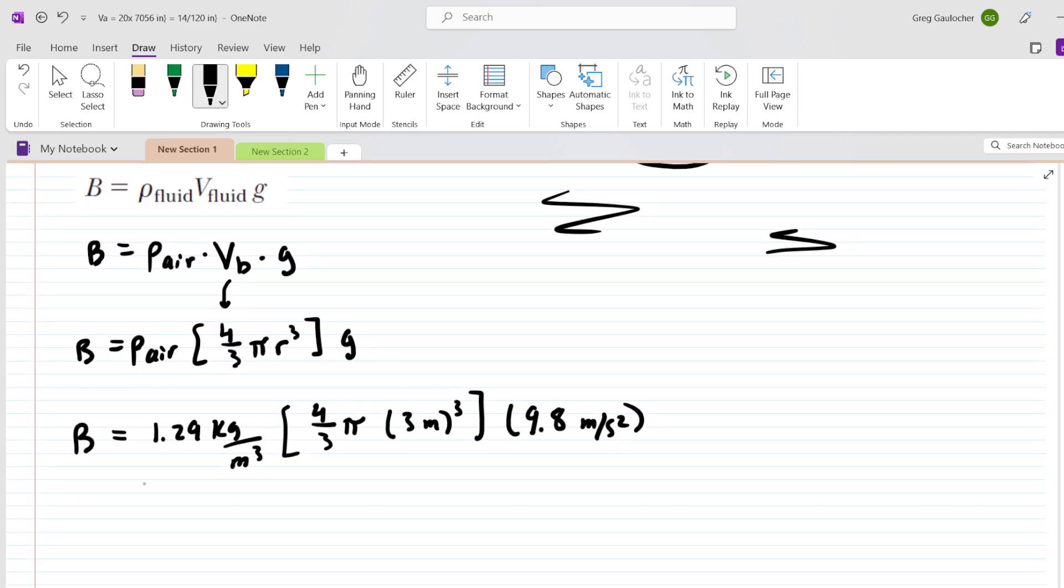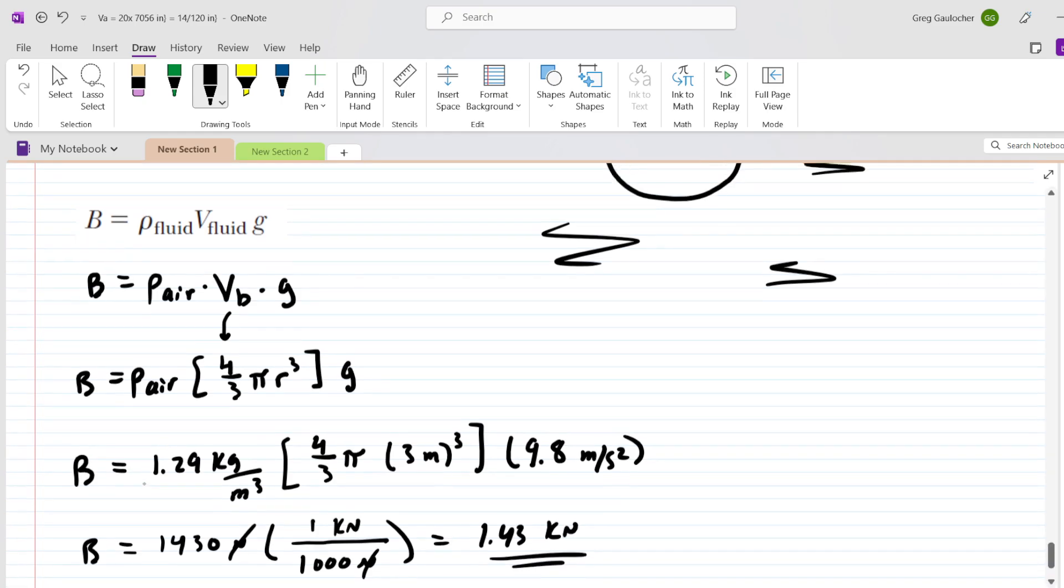Let's go ahead and plug everything in. When you simplify that, you will get a buoyant force of approximately 1,430 newtons. Your homework system may request kilonewtons, so we can set up a conversion in which 1 kilonewton is equivalent to 1,000 newtons. We multiply that, the newtons cancel, and we work that out to be 1.43 kilonewtons. This is the final answer to part A.